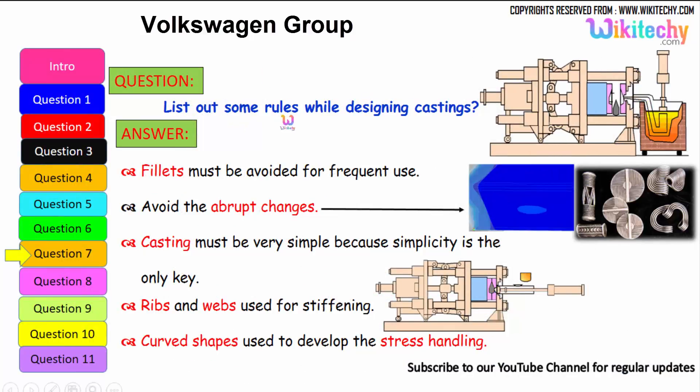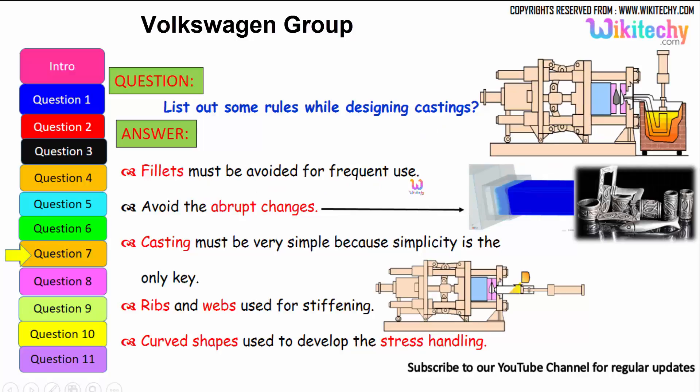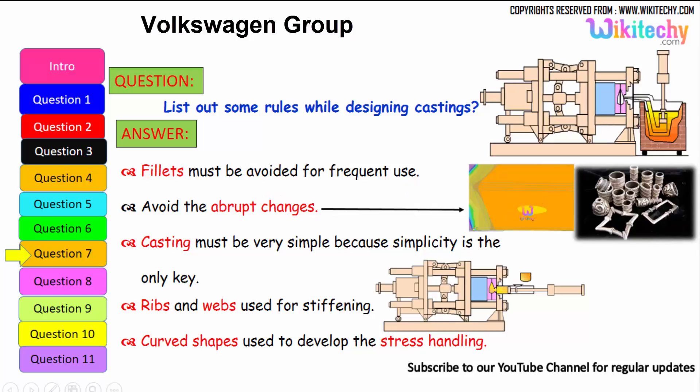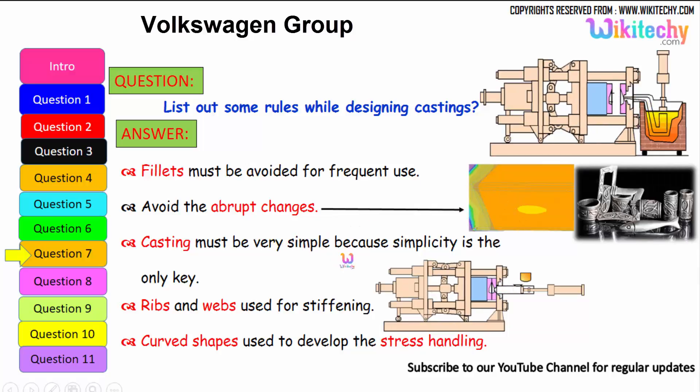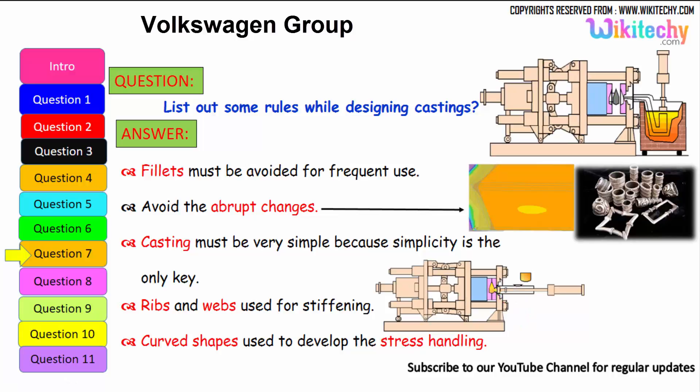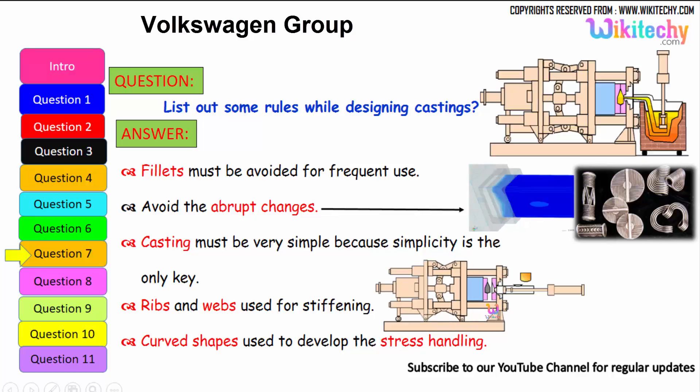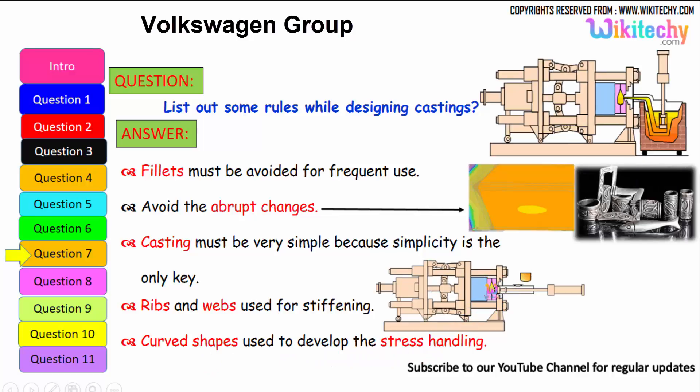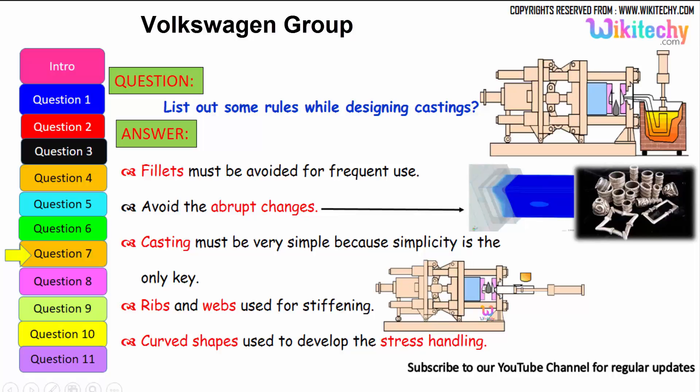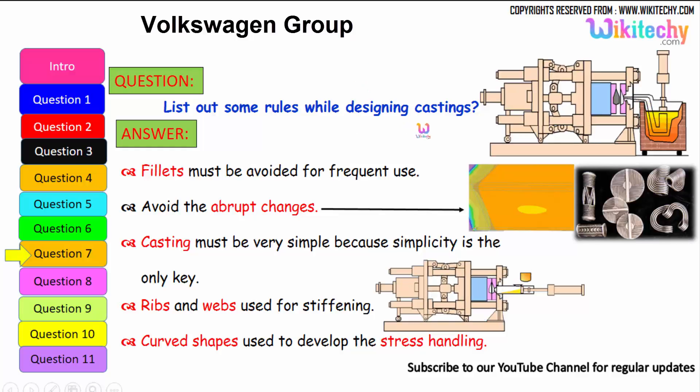Let us see some of the rules while designing casting. Fillets must be avoided for frequent use, that is the first one. Avoid the abrupt changes, it should not change. Casting must be very simple because simplicity is the only key. Ribs and webs are used for stiffening. You should have the ribs over here, you should have the ribs and everything. The curved shape should be used to develop the stress handling. It should be a curved shape to avoid the stress handling. These are all some of the rules which we have to follow for casting.